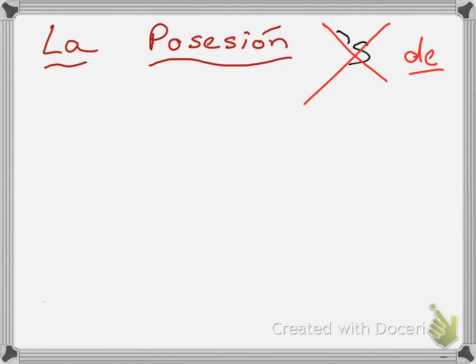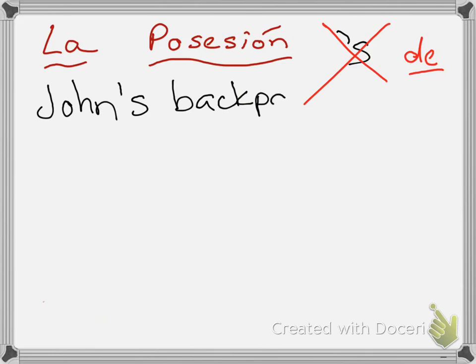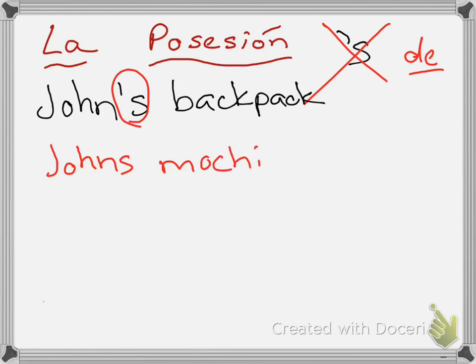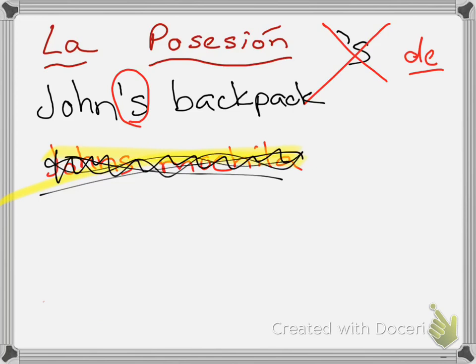Say it a few more times to yourself. So what do I do then if I want to show possession? For example, if I want to say my son John's backpack — I want to talk about John's backpack — I have this apostrophe S in English that does not exist in Spanish. What some kids mistakenly do is they just take out the apostrophe, and it becomes 'Johns mochila.' Okay, it does not work. It just does not work in Spanish.